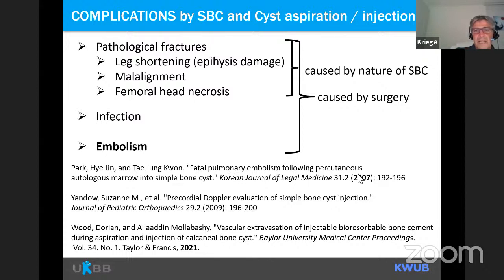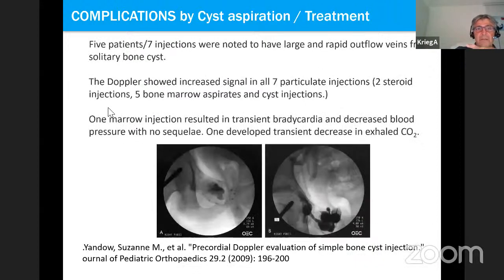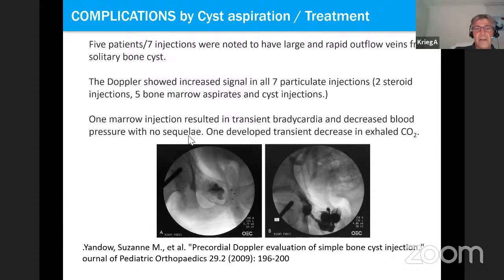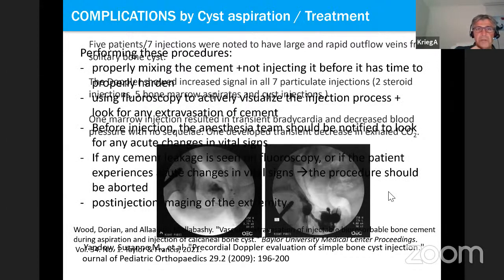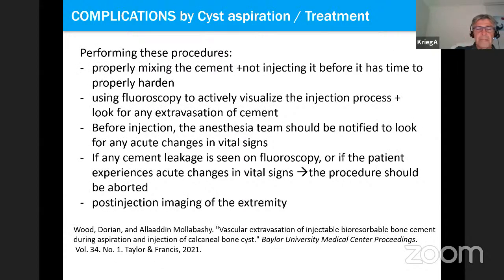There was a report in Korean of the first described fatal pulmonary embolism after percutaneous cyst aspiration and refilling with autologous marrow. Two years later a Doppler evaluation showed increased signal in all seven injections — five of seven patients showed large rapid venous outflow in solid bone cyst injections. In one case a marrow injection at the pelvis resulted in transient bradycardia and decreased blood pressure with no sequelae, and another developed transient decrease in exhaled CO2.